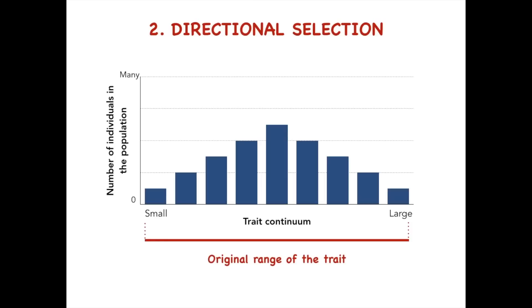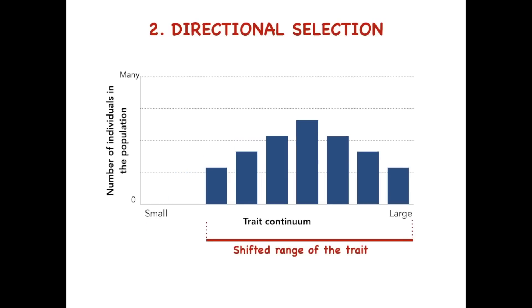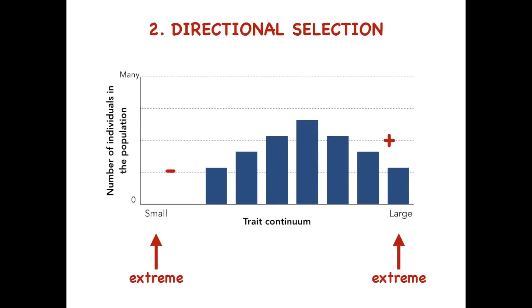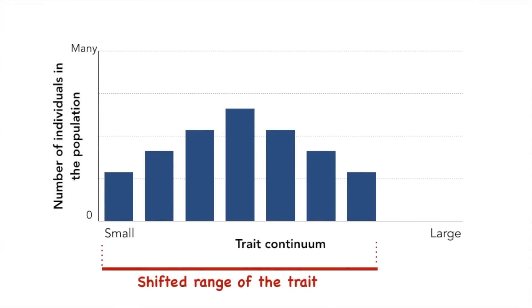A second mode of selection is directional selection. In this scenario, the value range of a trait in the population shifts one direction or the other. We can see that the original population before selection included some members with an extreme value of the trait. Individuals with one of the extremes have been selected against, while individuals with the other extreme have been selected for. As a result, the entire range of the trait has shifted to the right — it could also shift to the left.